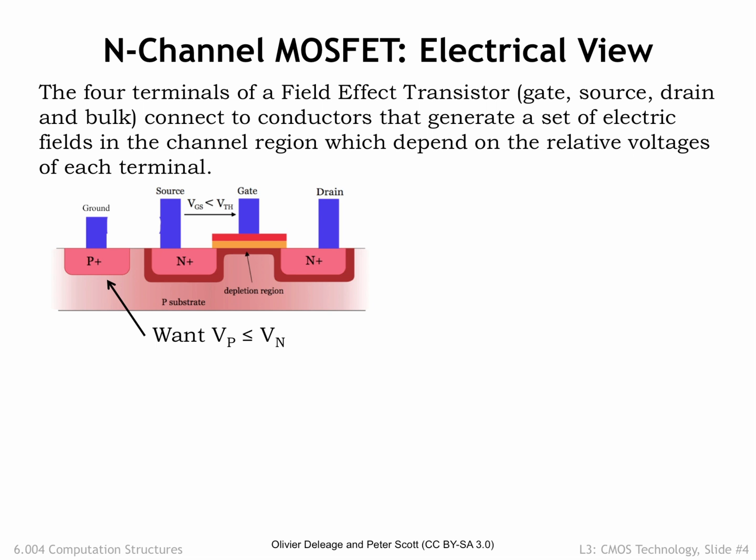The depletion region is a region of substrate where the current-carrying electrical particles have migrated away from the junction. The depletion zone serves as an insulating layer between the substrate and source/drain. The width of this insulating layer grows as the voltage of the source/drain gets larger relative to the voltage of the substrate, filling the region between the source and drain terminals and keeping them electrically isolated.